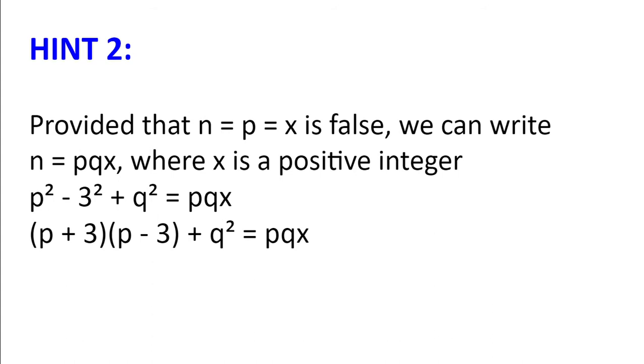Hint number 2. Provided that we've already looked at the case n equals p equals x, we can write n to be pqx, where x is a positive integer, and then we get p squared minus 3 squared plus q squared equals pqx. Or p plus 3 multiplied by p minus 3 plus q squared equals pqx.